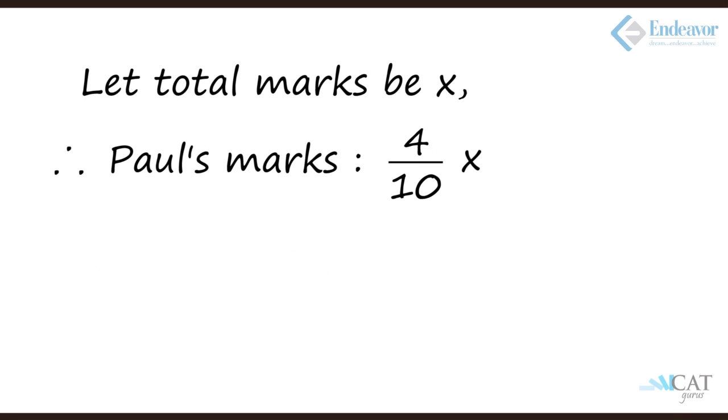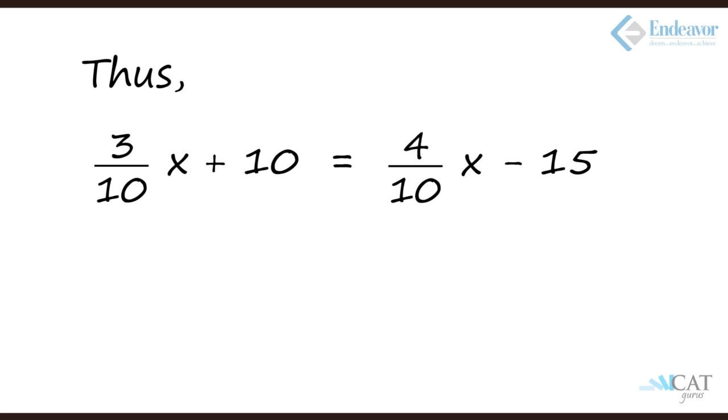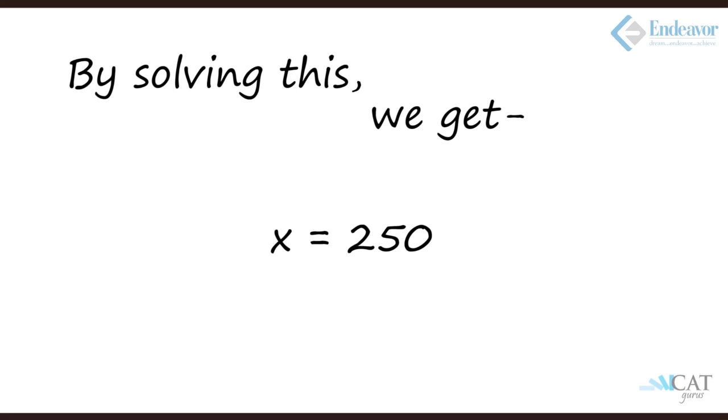Let us look at Paul. 40%, 4 upon 10. So 4 upon 10x, if we subtract 15 from there he would have just passed. So 4 upon 10x minus 15 would give us the passing marks. So 3 upon 10x plus 10 is equal to 4 upon 10x minus 15. So solving this we get 1 upon 10x is equal to 25. So passing marks becomes 250.